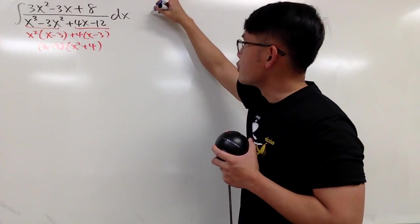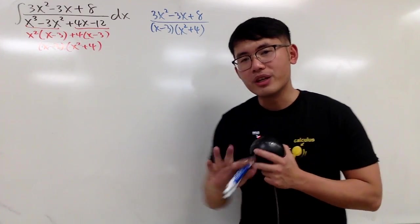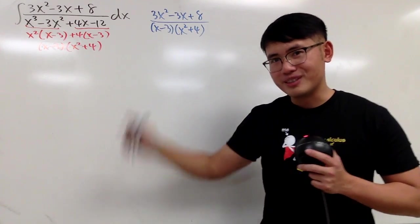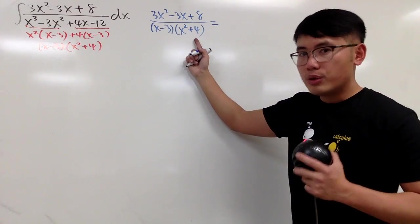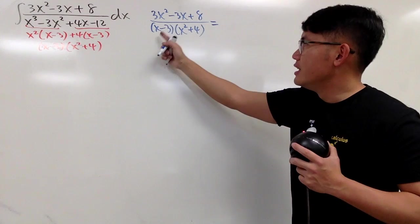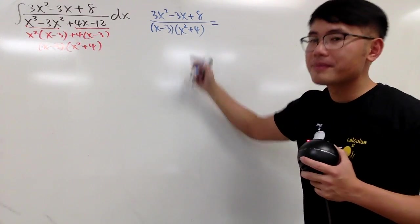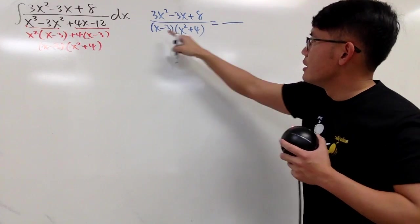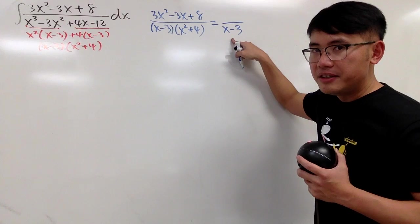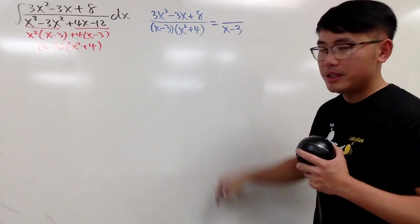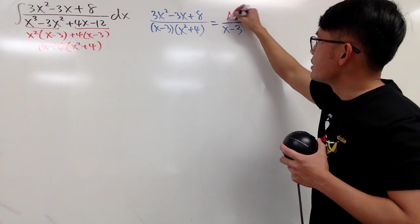And now, let me do the partial fraction on the side for you guys. And yes, x squared plus 4, we cannot factor it anymore. You have to deal with this right here. Now, let's talk about the setup. You have two different factors. This right here is linear, this right here is irreducible quadratic. So the setup is going to be, let's write this down first, x minus 3. And because this is linear, on the top, it has to be 1 degree lower, which is just a constant. We'll just put on A.